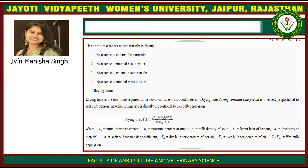Drying time is the total time required for removal of water from food material. Drying time during the constant rate period is inversely proportional to the wet bulb depression, while drying rate is proportional to the wet bulb depression. The drying time formula is: T = (WT − WI) × (ρs × L × D) / (H × (Tα − TW)), where WI is the initial moisture content, WT is the moisture content at time T, ρs is the bulk density of solid, L is the latent heat of vaporization, D is the thickness of the material, H is the surface heat transfer coefficient, Tα is the dry bulb temperature of hot air, TW is the wet bulb temperature of air, and (Tα − TW) is the wet bulb depression.